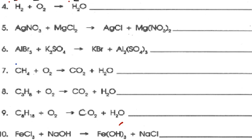Now we look at oxygens. We see there are two oxygens on the reactant side from the subscript, but only one oxygen on the product side. So we take a coefficient and put it in front — we use the number 2. Now the coefficient 2 distributes right through, giving us four hydrogens on the product side. So we put a 2 in front of hydrogen as well — 2 times 2 gives us 4. We have four hydrogens on each side and two oxygens on each side. The equation is balanced.